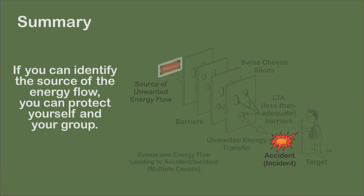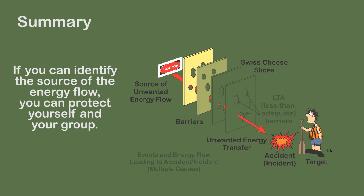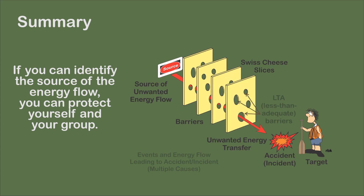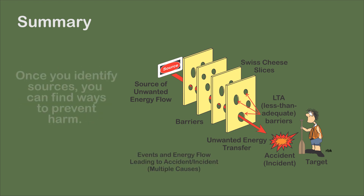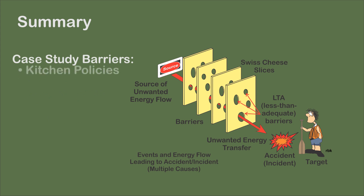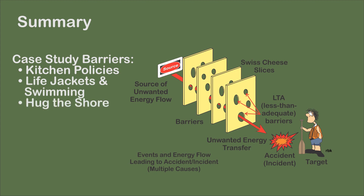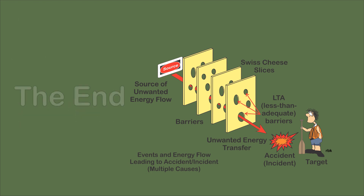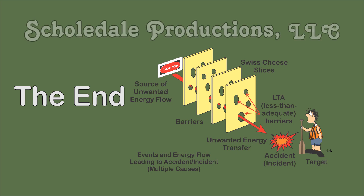Accidents or incidents are the result of an unwanted energy transfer from a source to the target. Risk management and accident prevention is the process of placing barriers — which are less than adequate — to prevent or reduce the impact of the energy transfer. Play the what-if game: what can harm me and my group? Once you identify the sources that can harm you, it is a process of finding ways to prevent the harm. It could be deciding that cooks wear shoes and long pants in the kitchen, deciding to wear life jackets while swimming, deciding to hug the shore, deciding to have a layover day, or deciding to set up rescue at the bottom of a rapids. It is the process of making decisions that protect you and your group from harm.